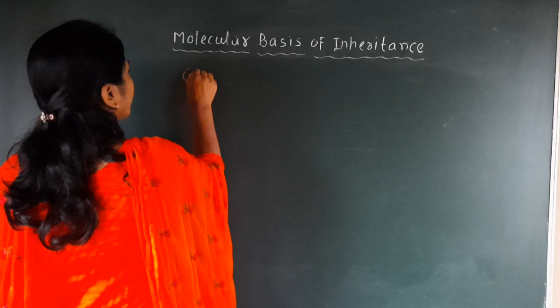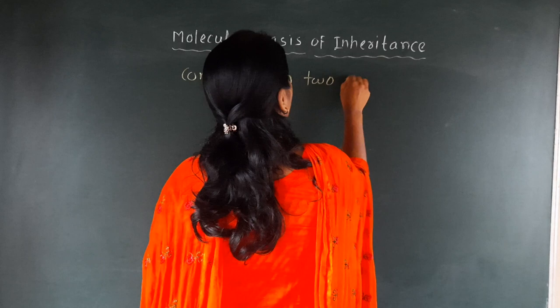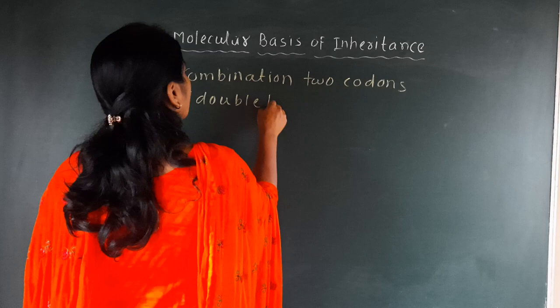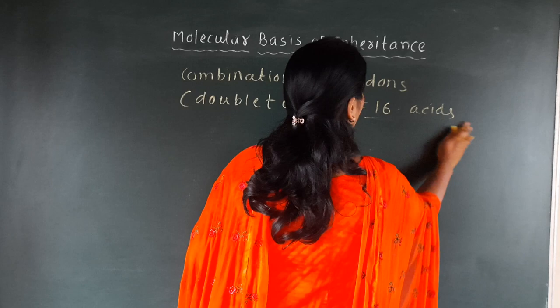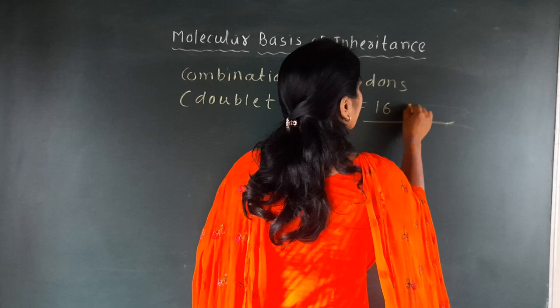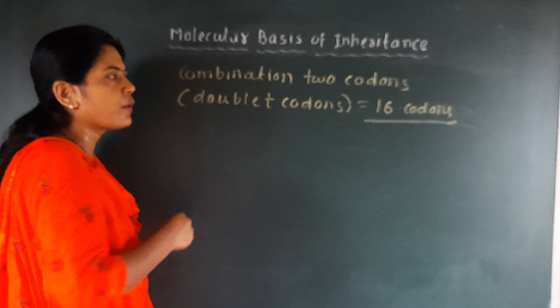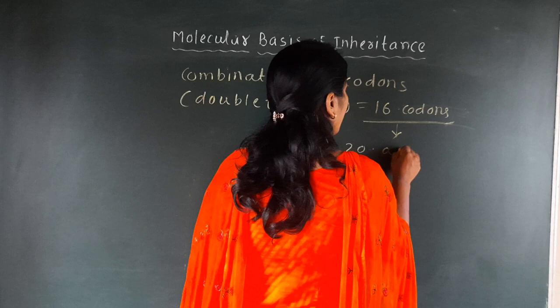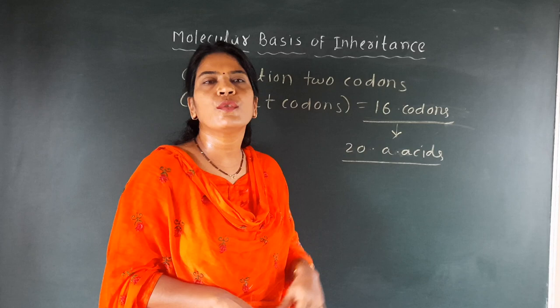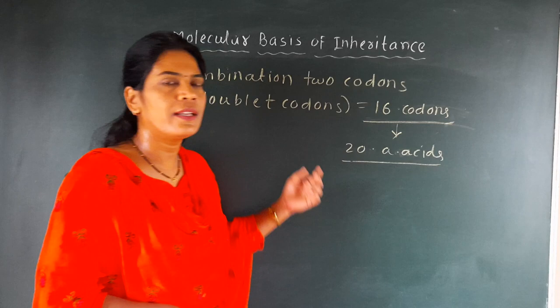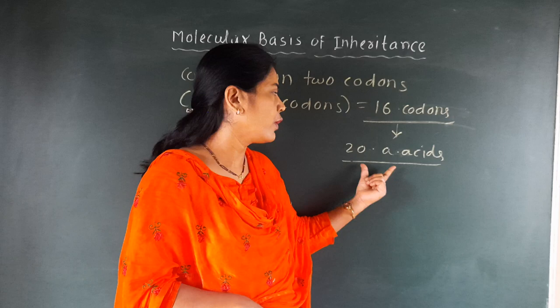The combination of two codons, that is the doublet codons, will specify only 16 amino acids. There will be formation of 16 codons if two-two codons are taken. If there is a formation of 16 codons, these 16 codons will specify only 20 amino acids. Here, the number of codons is less but the amino acids are more, so it is not possible to specify 20 amino acids by only 16 codons.